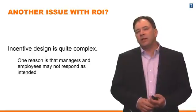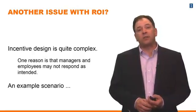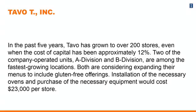Let's consider this in the guise of ROI, with an example scenario. We're considering TAVO-T Inc. In the past five years, TAVO has grown to over 200 stores, even when the cost of capital has been approximately 12%. Two company-operated units — the A Division and the B Division — are among the fastest-growing locations, and both are considering expanding their menus to include gluten-free offerings. Installation of the necessary ovens and equipment would cost $23,000 per store location.